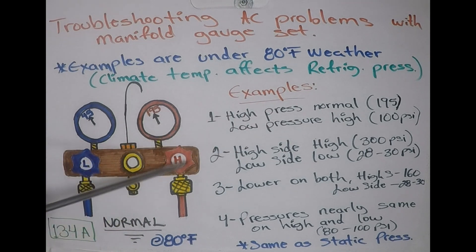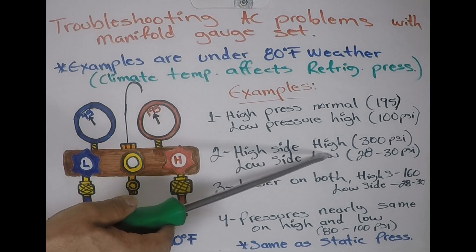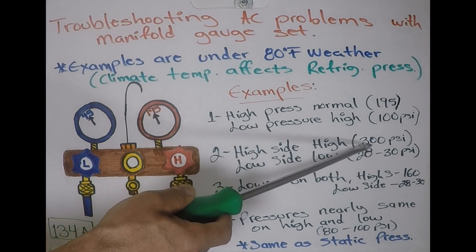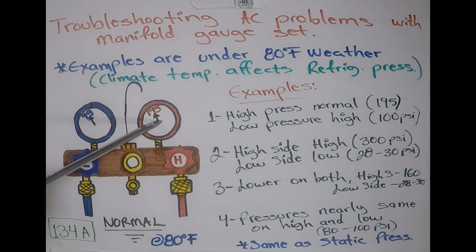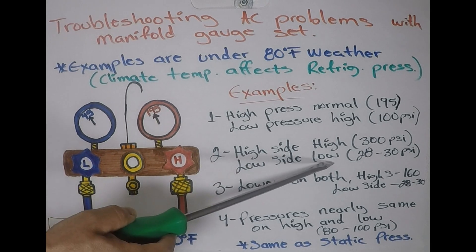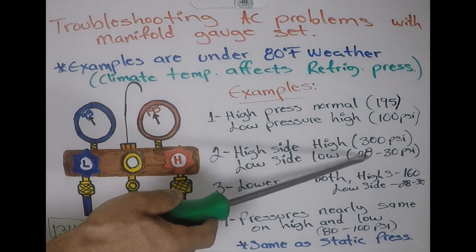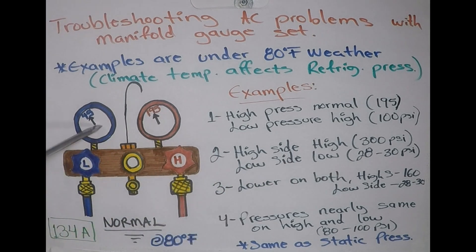So now let's go over problem number two. Let's say that the high side is high, it's about 300, so it's 105 over the normal, but the low side is low. It's somewhere around 28 to 30, when it should be around 45. So at that point, the same components could be the problem, which is the orifice tube or the expansion valve, but instead of letting too much pressure go through, now they're not letting it go through.